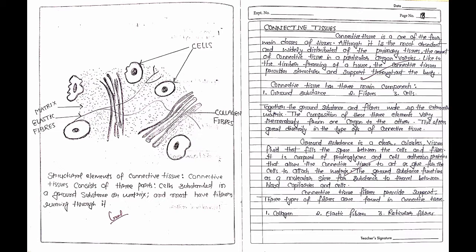And then we see the connective tissue. Connective tissue is one of the four main classes of tissue. Although it is the most abundant and widely distributed of the primary tissues, the amount of connective tissue in a particular organ varies.